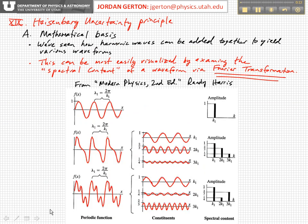Let's start with a short discussion of the mathematical basis behind the Heisenberg Uncertainty Principle. This basically builds on the previous lecture where we talked about wave packets, waves, and the classical uncertainty relations that result when you add harmonic waves together.